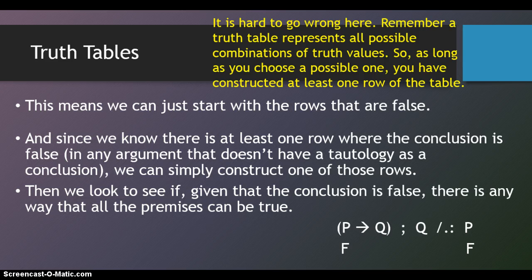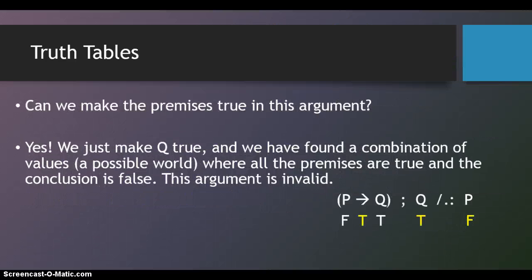When stipulating that the conclusion is false, it's hard to go wrong. Remember that a truth table represents all possible combinations of truth values. So, as long as you construct a possible row, or a possible world, you've constructed at least one row of the table. Now we ask, can we make the premises in this argument true?